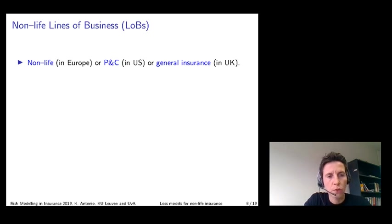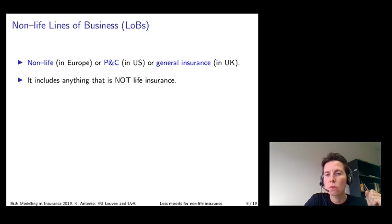Fire insurance is mentioned as a first example of a product from the branch of non-life insurance. The branch or domain of non-life insurance is also very often denoted as P and C insurance, where the P refers to property and the C refers to casualty. That's a name typically used in the States. In the UK, people often call this domain general insurance, which includes everything that is not life insurance.